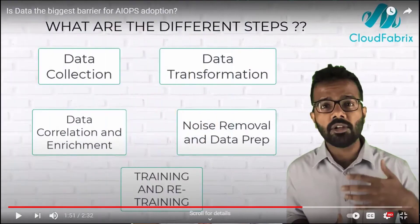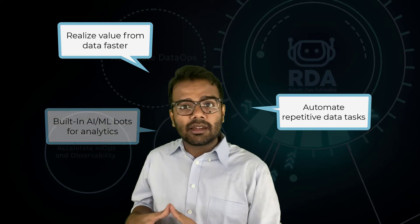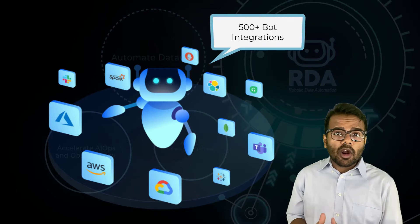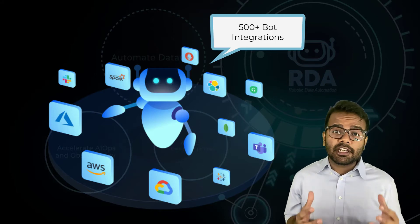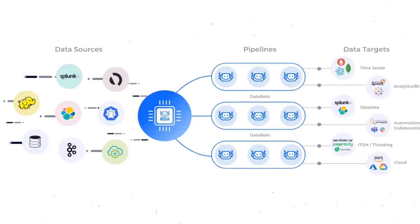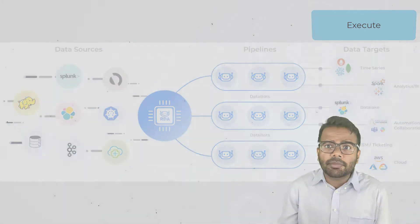RDA helps enterprises realize value from data faster by simplifying and automating repetitive data tasks like data integration, data preparation, and data transformation, including built-in AI and ML bots for analytics and visualizations as well. All you have to do is pick and choose the bots from the 500-plus data bots that RDA provides, sequence them into a pipeline, and just click the execute button to launch the pipeline.